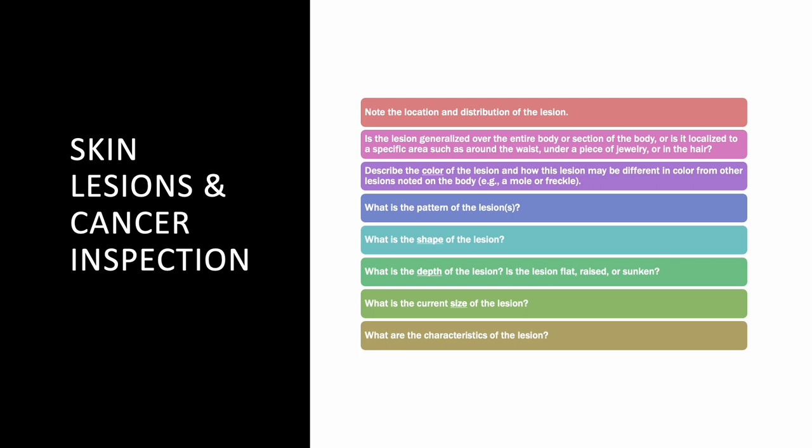Skin lesions and cancer inspection is a pretty important topic. When looking for an abnormal area of the skin, I need to know where it's located, how it's distributed, whether it's raised, and whether there's a pattern. Most importantly, I need to know the color of the lesion.